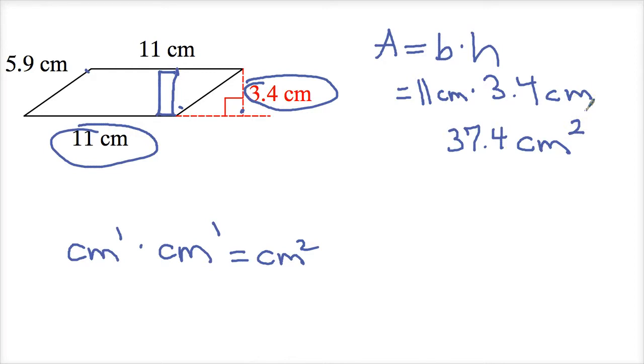This squared says 37.4 centimeters, and it's two-dimensional measurement. So, that's it. One more, and I think we're good.